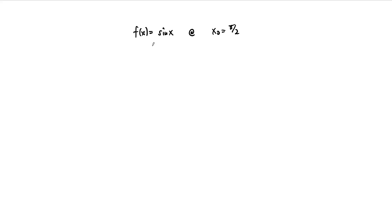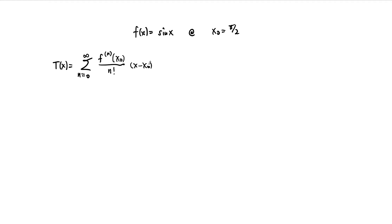In this example, we'd like to find the Taylor series for the function sine of x — the trig function sine of x — centered at pi over two. So let's first remember what the formula for the Taylor series is. It's always equal to the sum from zero to infinity. The whole goal of a series is to determine the coefficients. For the Taylor series, it's always f, the nth derivative at x naught, the center point, divided by n factorial times x minus the center point to the nth power. And so this is the formula for the Taylor series. We need to figure out what the coefficients should be for sine of x centered at pi over two.